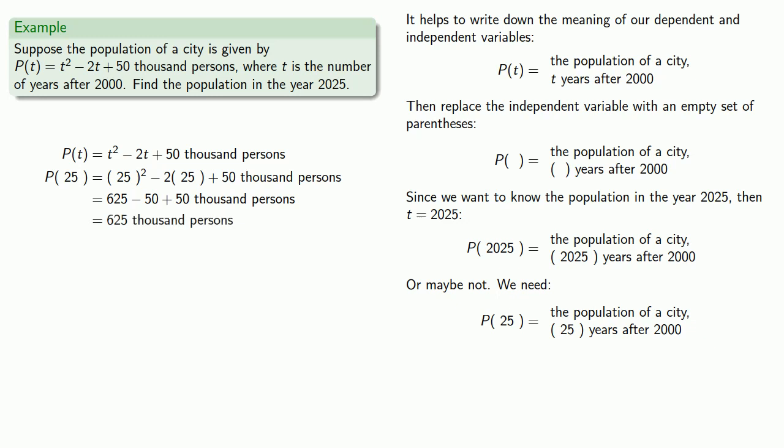Finally, it's a good idea to give your answer the same dialect that the question was asked in. So the question was, find the population in the year 2025. This is a complete sentence in English. And so we should write our answer as a complete sentence in English. The population will be 625,000 persons.